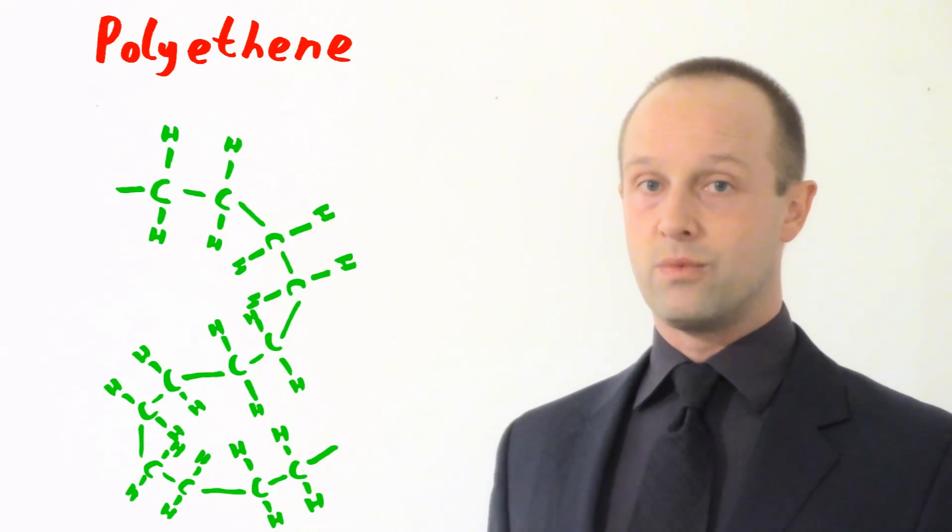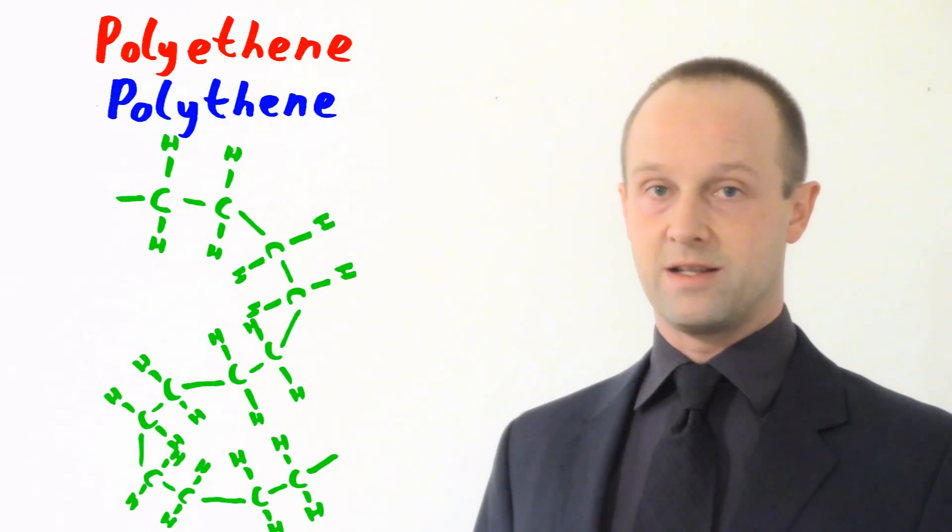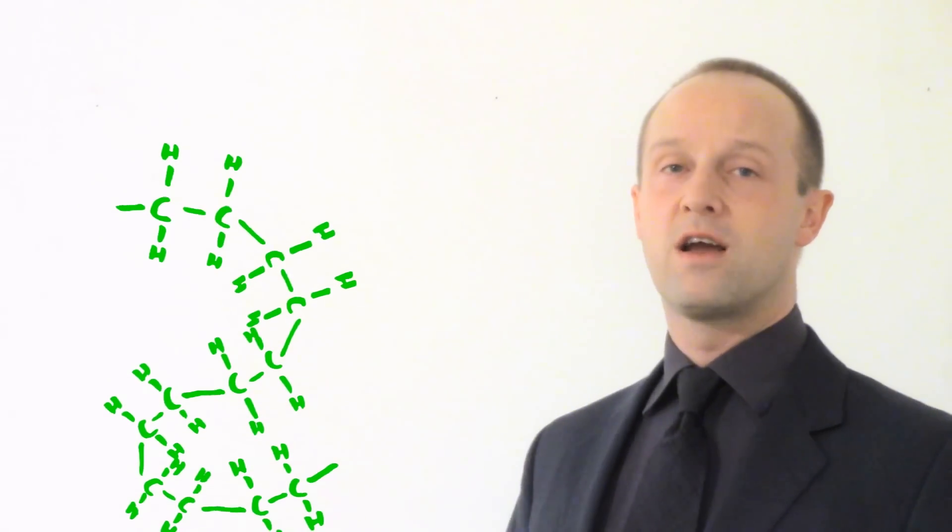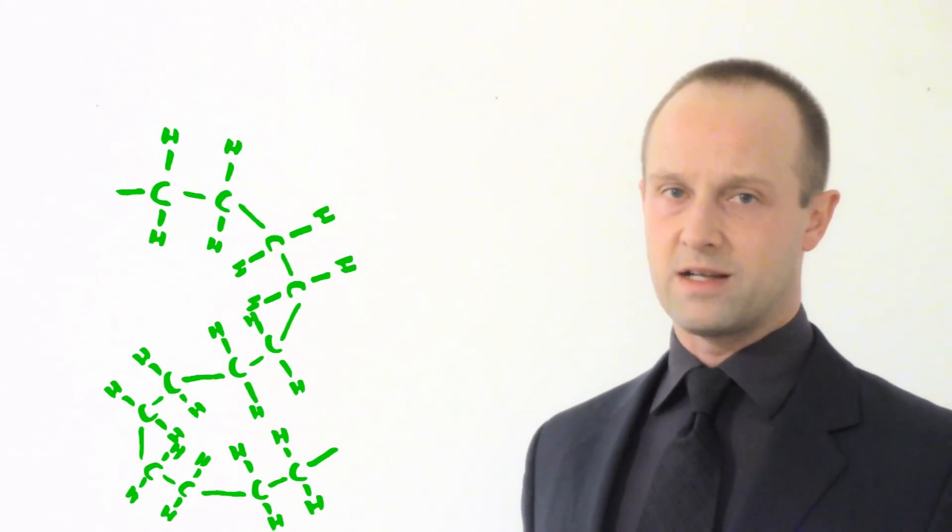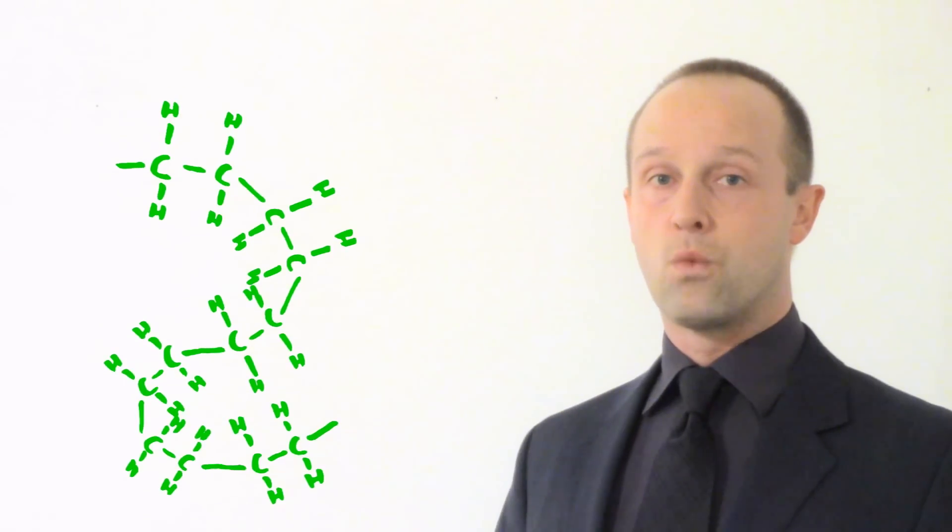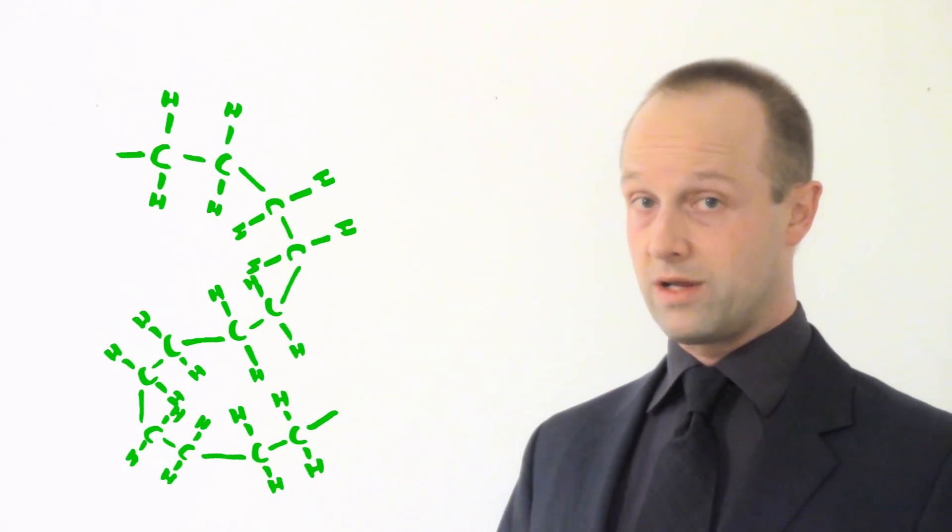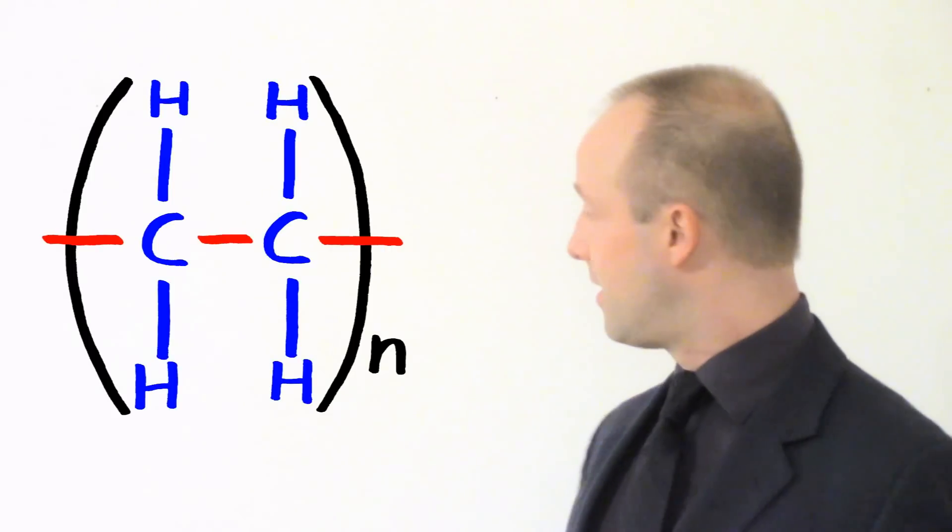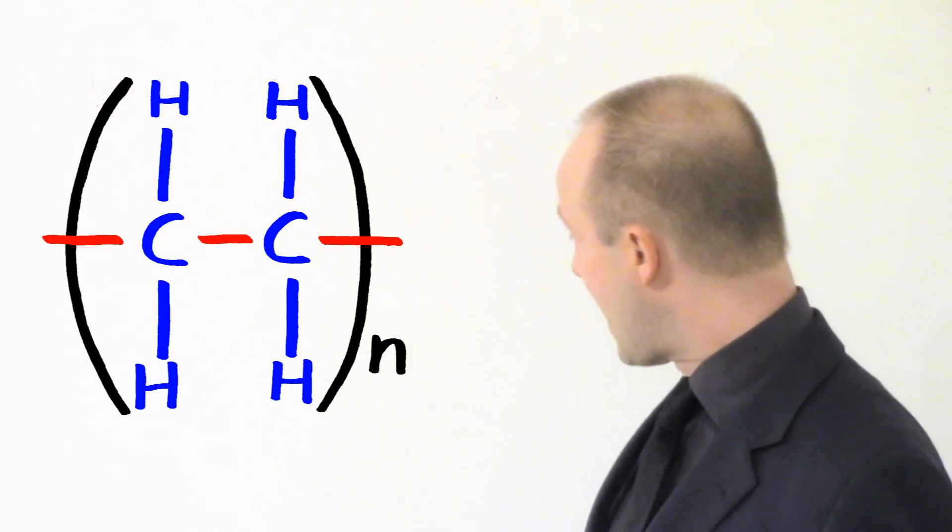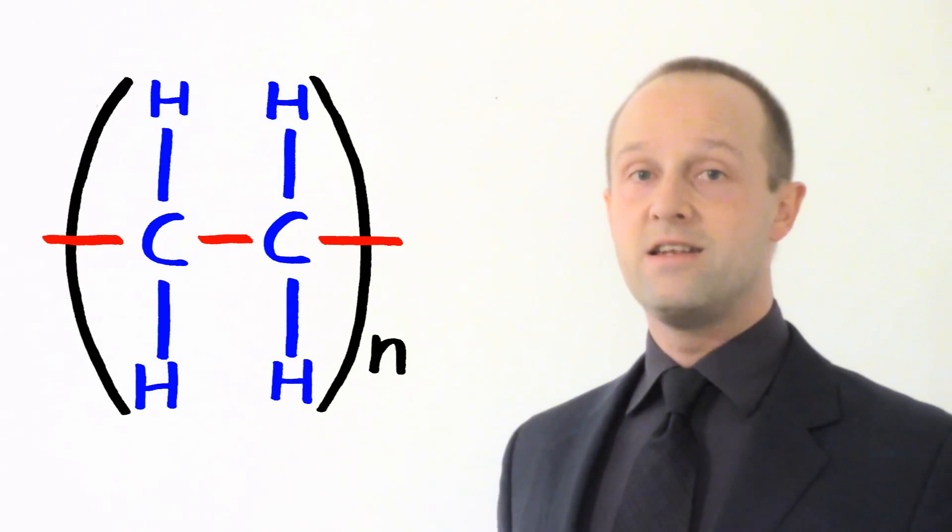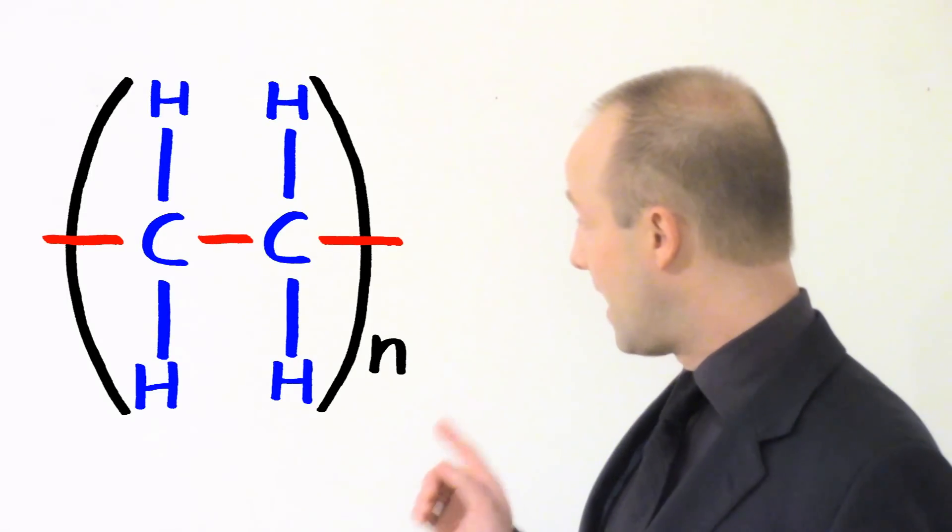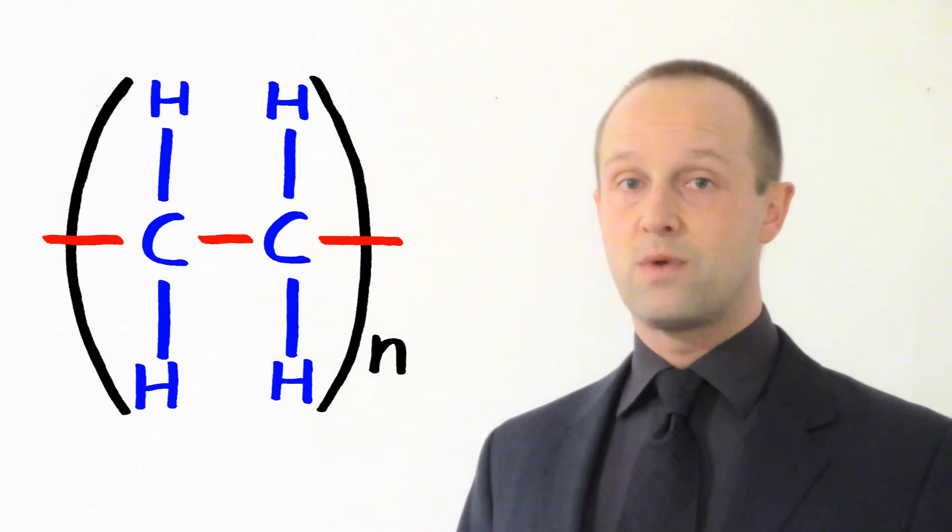The word poly just implies that there's more than one of these ethene monomers in a chain now. And actually, we tend to shorten the word polyethene to polythene just because it's a little bit easier to say. Typically, we draw this long chain which can go on for thousands and thousands of carbon atoms. Typically, we'll draw this to show the structure of one link of the chain. We draw that like this. The brackets show that it continues on. And this N here shows that there can be any number of links in this chain.